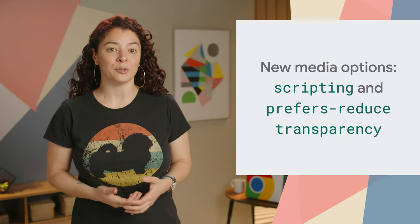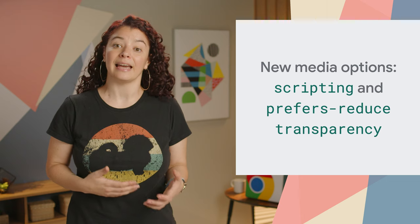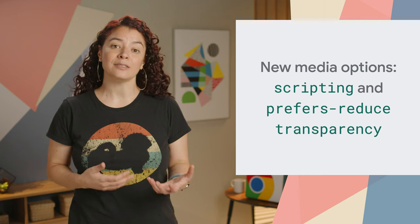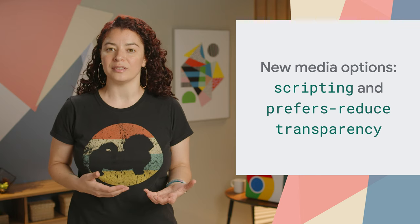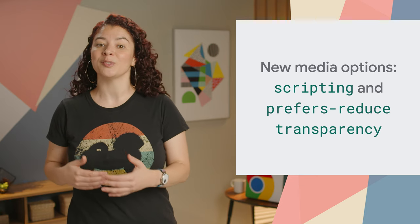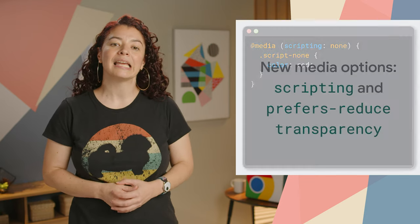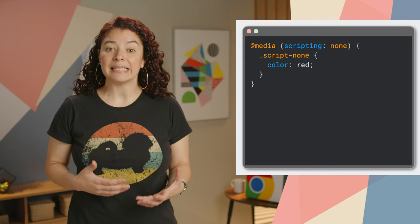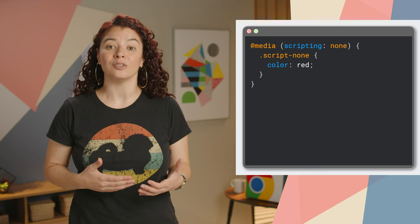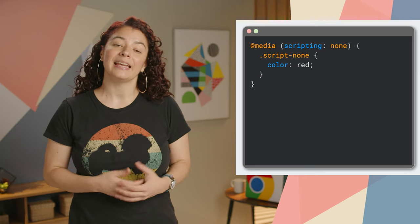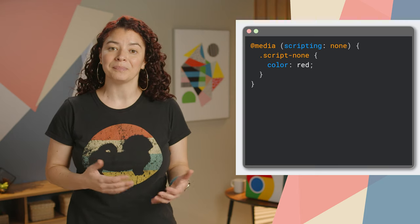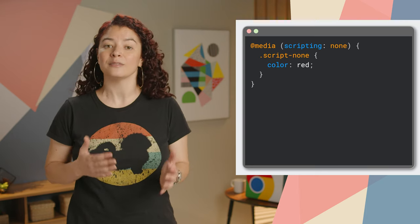We use media queries to provide user experiences that adapt to the user's preferences and device conditions. This update adds two new values that can be used to adapt the user experience: scripting and prefers-reduced-transparency. We may take for granted the presence of scripting when our users access the web, however scripting is not always enabled. Now, using the scripting media feature, you can detect if scripting is available and apply particular styles for each case.